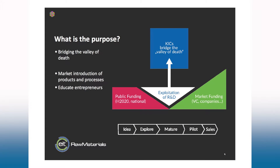The purpose of EIT Raw Materials is to bridge the gap between national funding, European funding, and the way to put new services or new products on the market. We can help SMEs or big players to support technology transfer and create new services or products. We can also help new entrepreneurs to build startups and spin-offs and help them go to market.